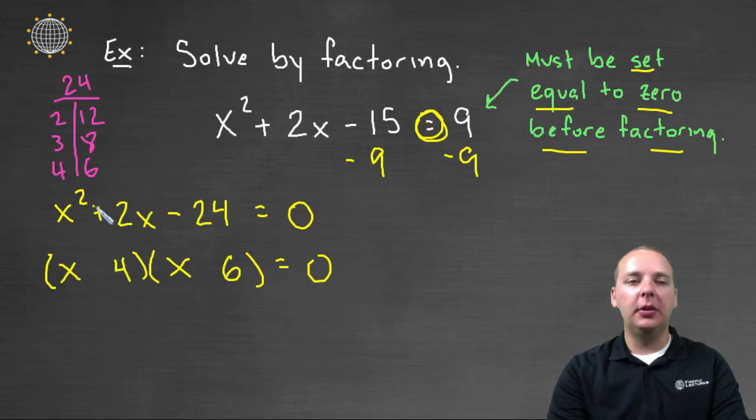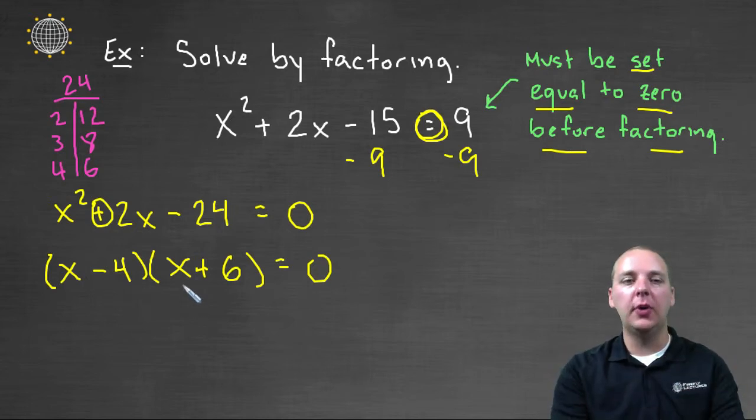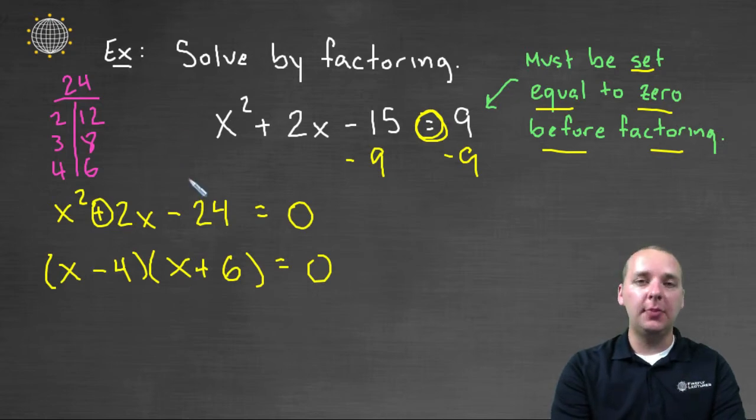And to get a plus 2, the 6 would have to be positive to get 6x. And then the 4 would have to be negative to give me minus 4x. 6x minus 4x would give me 2x.